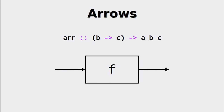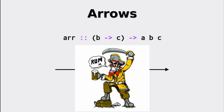Here we can see how to read the type of arrows. The function going from B to C has transformed into the arrow B to C. A very well-known and absolutely not made-up fact is that this function is known as the pirate function due to its name, and I will continue calling it that for the rest of the video.